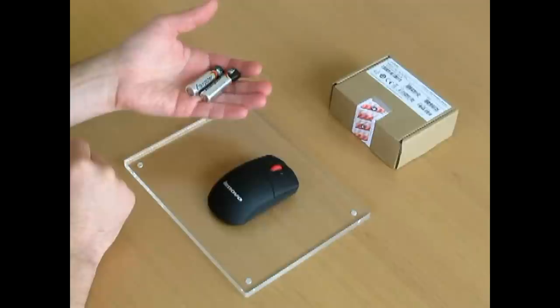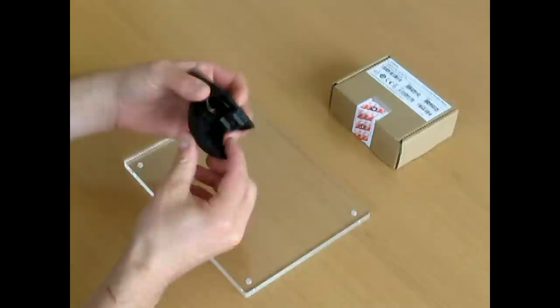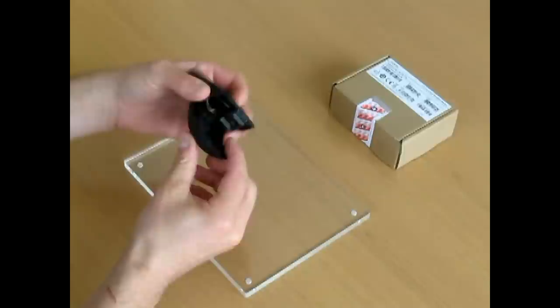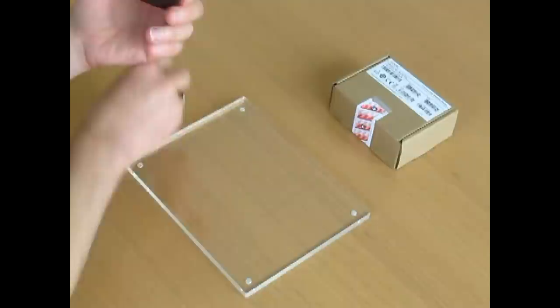You open the mouse from the bottom, easy access for battery slots, and also you can store the USB receiver inside, which is held here by a small magnet inside.